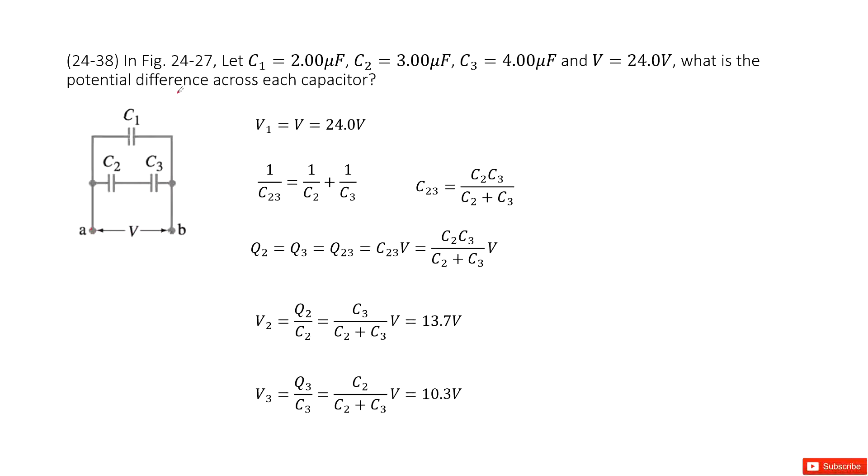Now we need to find the potential difference across each capacitance. We can see that C1 is in parallel with C2 and C3, where C2 and C3 are in series connection.